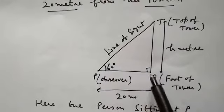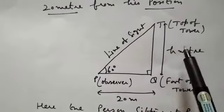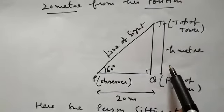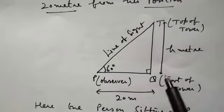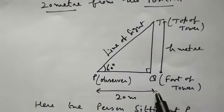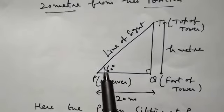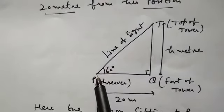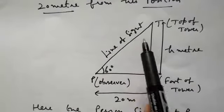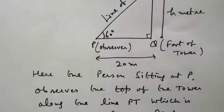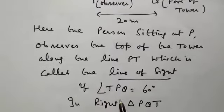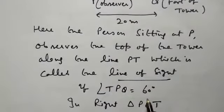Look at the figure carefully. This is tower TQ — T is the top of the tower and Q is the foot of the tower. We suppose the height of the tower is H meters. The person is at P, and the distance of the observer from the foot of the tower is 20 meters. The line through which he is observing the top of the tower is known as the line of sight. Here, PT is the line of sight. Suppose angle TPQ is 60 degrees.